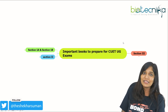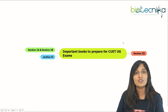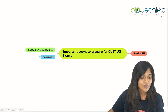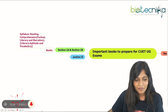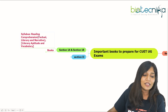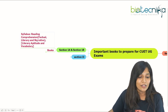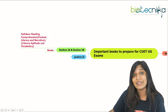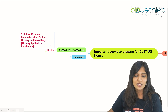There are going to be three sections and I'll be talking about all the important books for all three sections. The first is Section 1A and Section 1B, which will have reading comprehension — usually in English — covering factual, literary, and narrative content, along with literary aptitude and vocabulary testing.